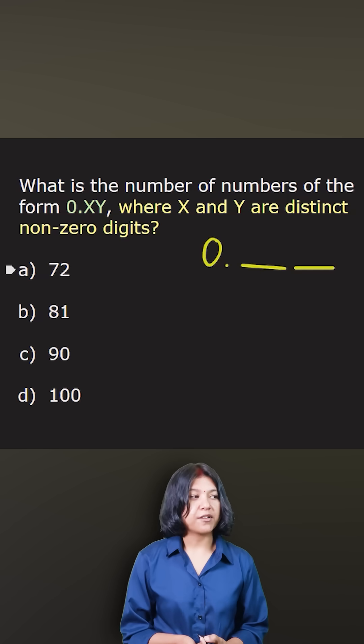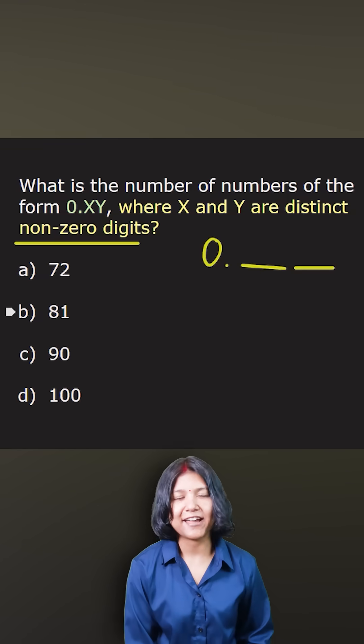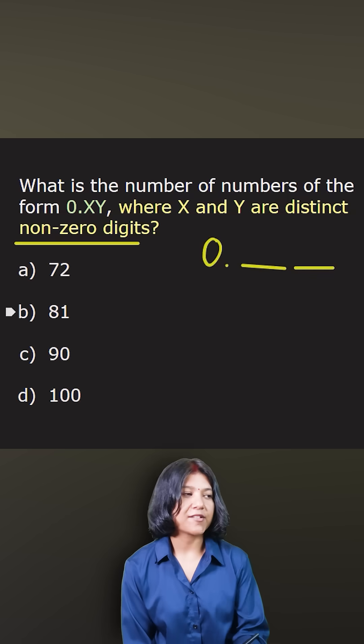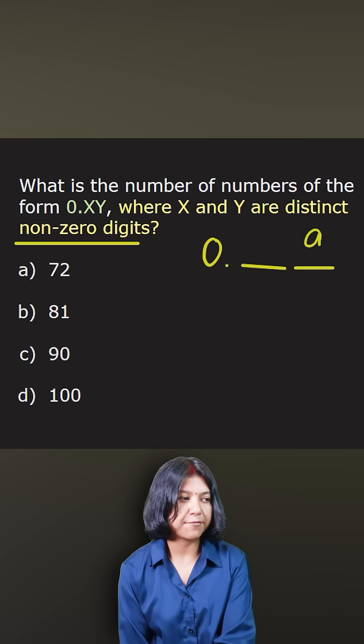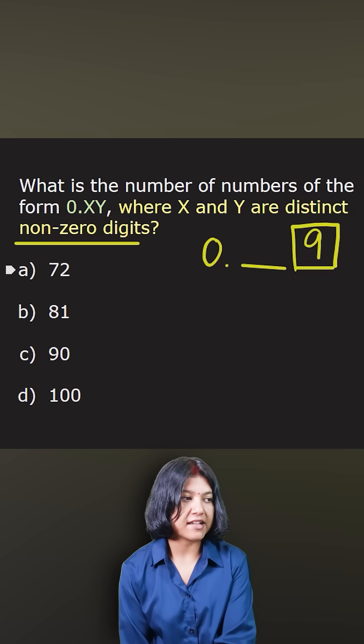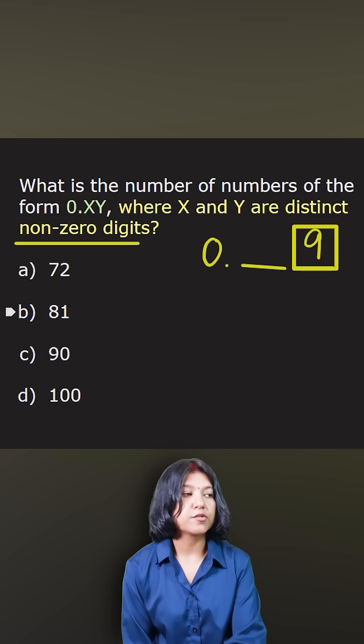How to approach this? The question clearly told you non-zero digits. I have nine non-zero digits, so I have nine options to fill up one place. Because I'll be using one of the digits to fill up this place, I'll now have only eight options to fill up the second place, since I used one digit already.